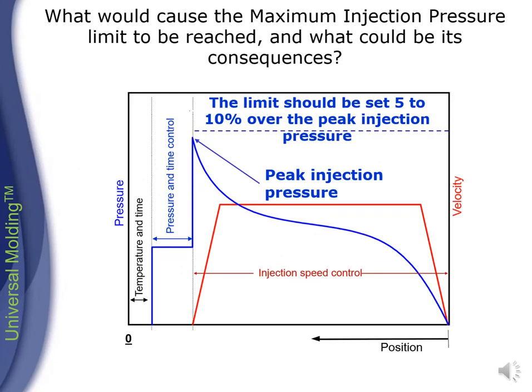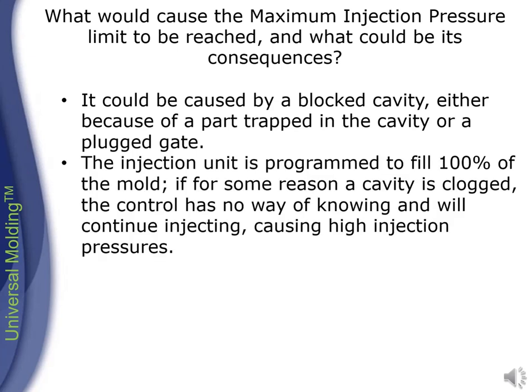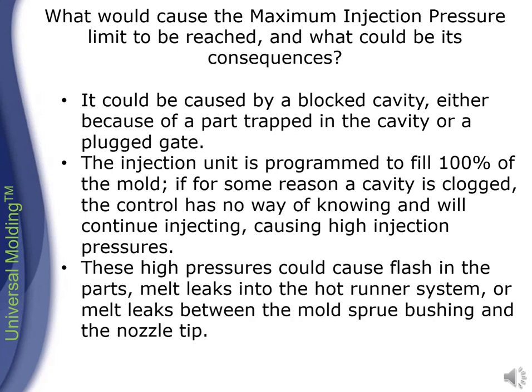What would cause the maximum injection pressure limit to be reached and what could be its consequences? It could be caused by a blocked cavity, either because of a part trapped in the cavity or a plugged gate. The injection unit is programmed to fill 100 percent of the mold. If a cavity is clogged, the control has no way of knowing and will continue injecting, causing high injection pressures. These high pressures can cause flash in the parts, melt leaks into the hot runner system, or melt leaks between the mold sprue bushing and the nozzle tip.